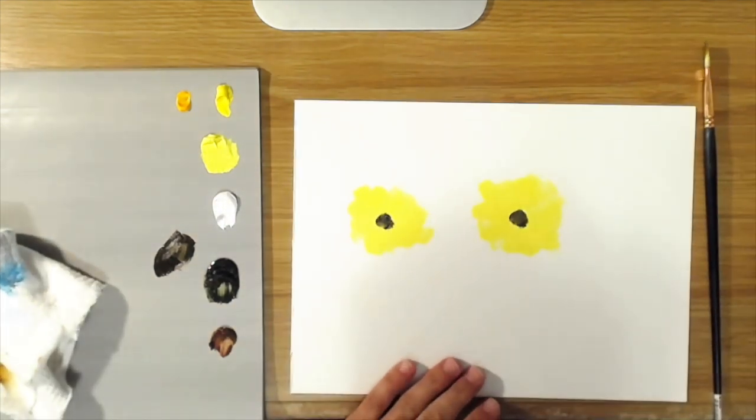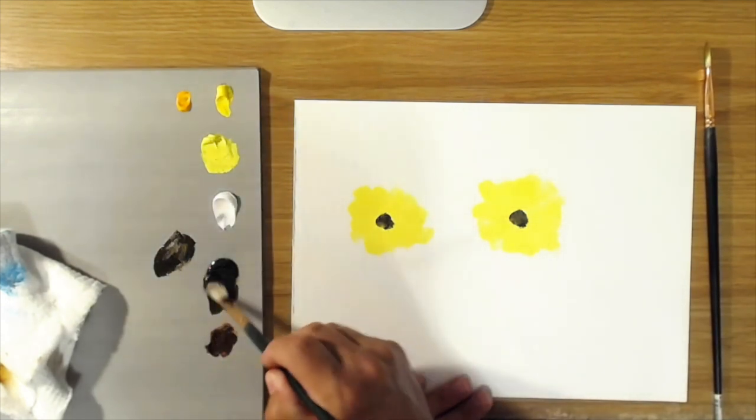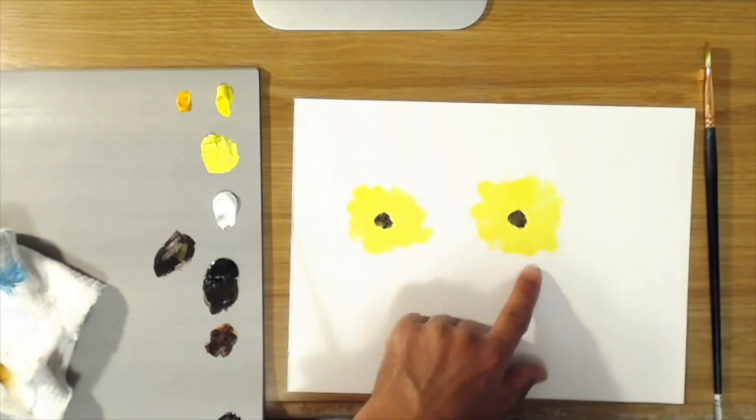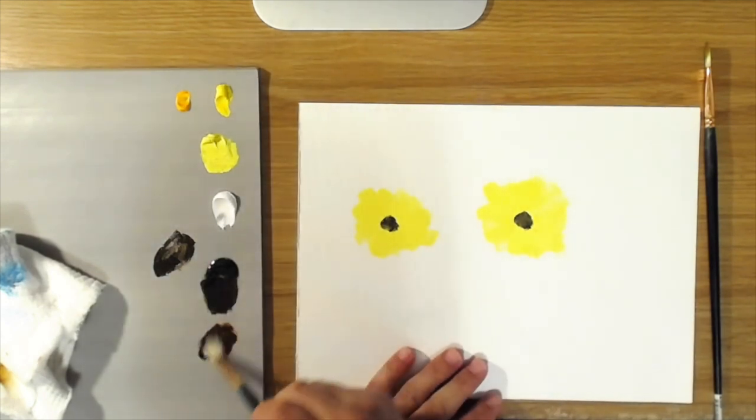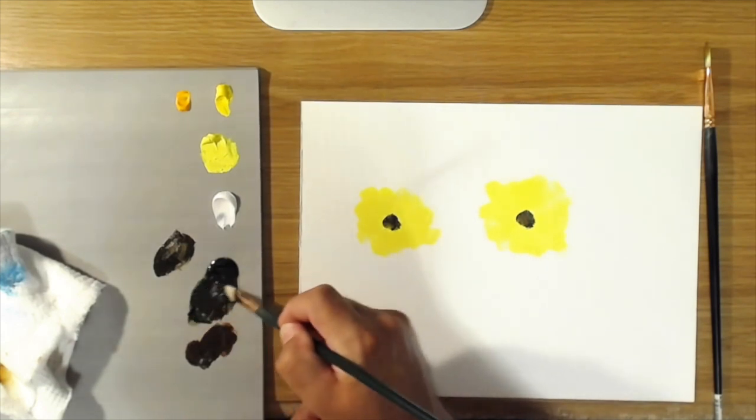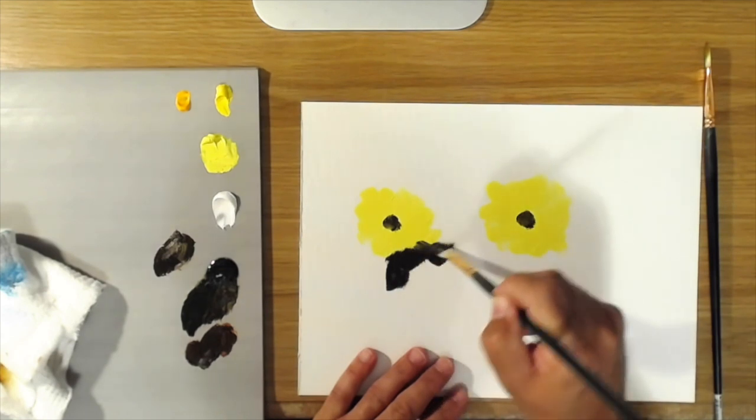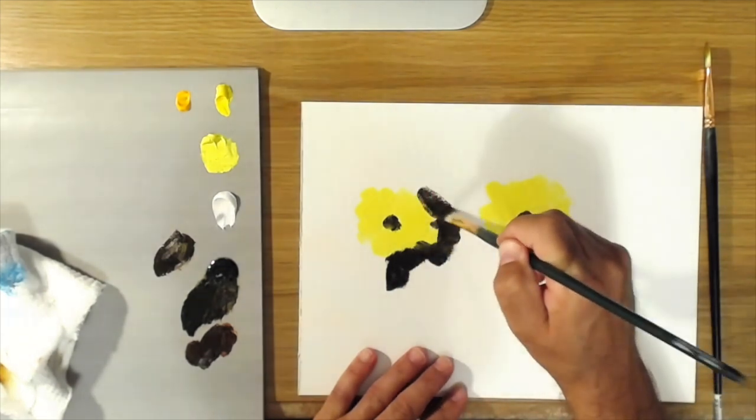But if I were to paint this one, let's say, was against a white background or a light background like we have here on the palette, and I were to go in behind this one, let's say, and put in a real dark background.